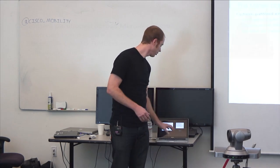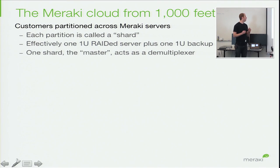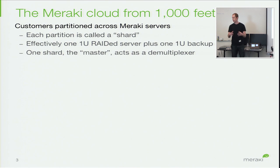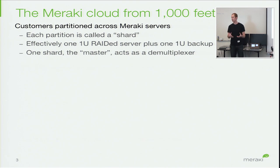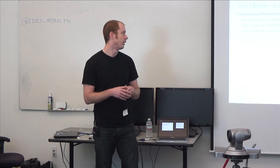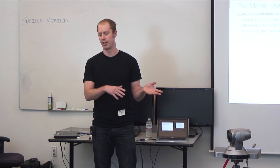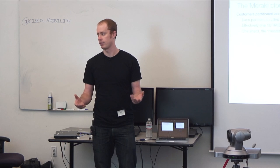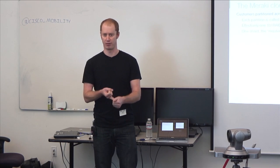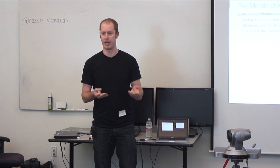From a thousand feet away, the cloud architecture we have is reasonably straightforward. We take the set of customers, partition them up, and assign any given partition to a particular server. We call that server a shard — the term is of dual use for both the server and the partition. It's effectively a 1U server with two disk arrays, and a 1U backup in a completely different data center. That separate data center is given to us by a different provider, so we have data center redundancy, provider redundancy, and city redundancy.